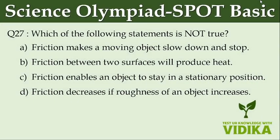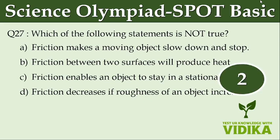Which of the following statements is not true? Option A, friction makes a moving object slow down and stop. Option B, friction between two surfaces will produce heat. Option C, friction enables an object to stay in a stationary position. Option D, friction decreases if roughness of an object increases.